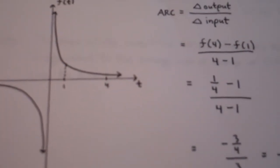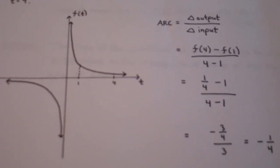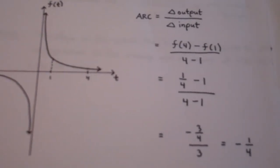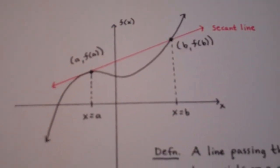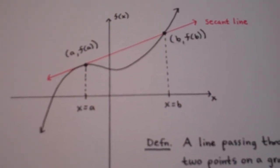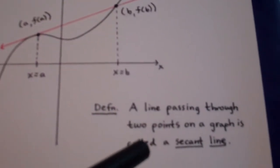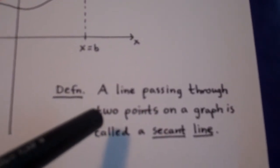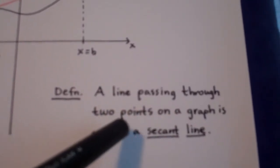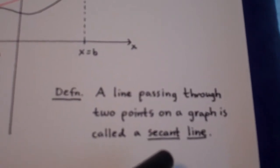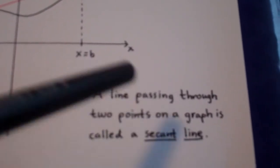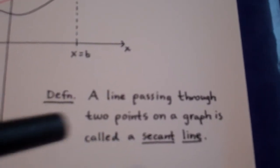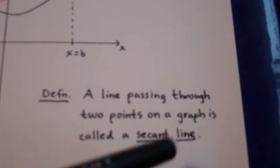Now let's introduce a term that will be important when you take calculus — the concept of a secant line. I'm not going to give too many exercises on this next concept, but it's worth mentioning. Anytime you have a line passing through two points on a graph, that line is called a secant line.